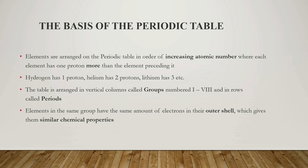One more important point to note here is that elements in the same group have the same number of electrons in their outer shell, which gives them similar chemical properties. We've now covered almost 80% of the information, and now let's see how exactly this periodic table looks.